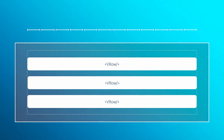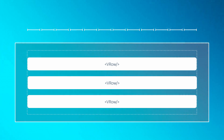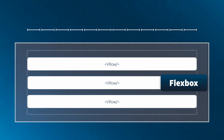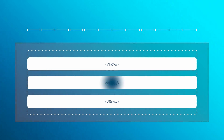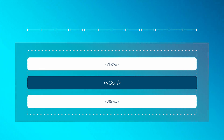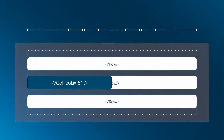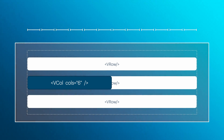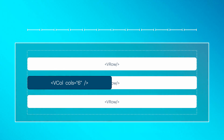Next, we have the V-row. Rows are used within containers and are wrappers for the columns. They ensure that columns are placed in a horizontal layout, and they use the Flexbox layout model to align and distribute space among items in a row, so Flexbox properties can be applied to the V-row component with ease. Finally, we have the V-col. Columns are the fundamental building blocks of the grid system. You can specify how many of the 12 available columns each V-col component should span using the cols attribute. For instance, cols equals 6 means the column takes up half the container's width since 6 is half of 12.